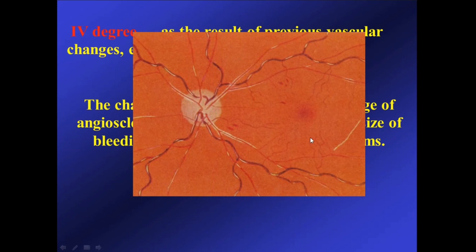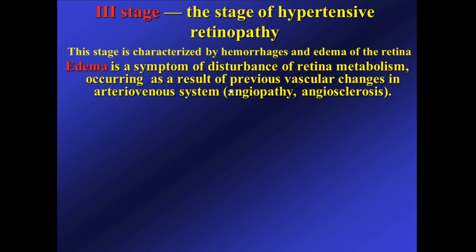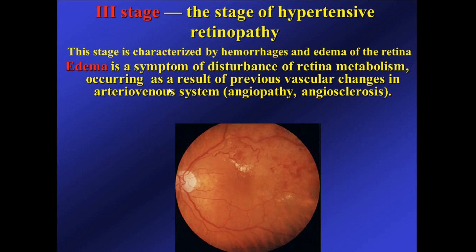You can see pictures of angiosclerosis and examples of the Salus-Gunn symptom where the vein looks interrupted. The third stage of hypertensive retinopathy is the stage of hypertensive retinopathy proper. In this stage, we can see hemorrhages and edema in the retina — not just small hemorrhages like in the angiosclerosis stage, but big hemorrhages and big edema. You can see hemorrhages and edema on these pictures.